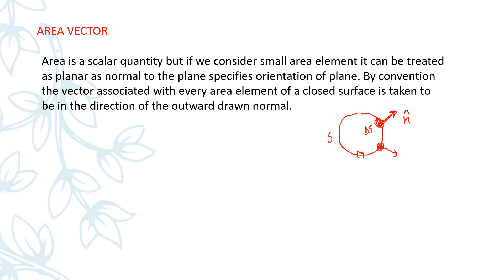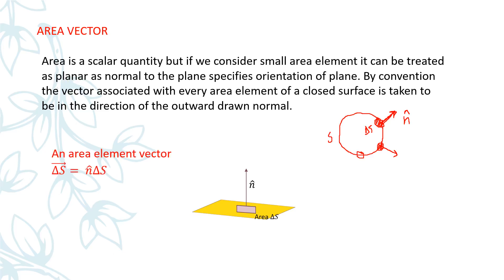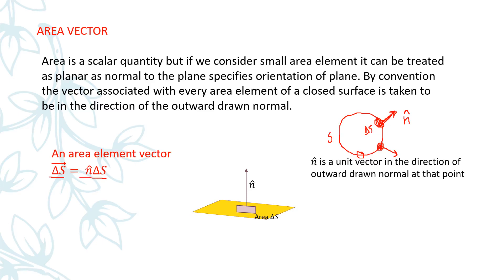If we have a surface and there is a small area element, the magnitude of this area element is ΔS and n̂ is the unit vector normal to the surface. So the area vector can be written as ΔS⃗ = n̂ · ΔS, where ΔS is the magnitude and n̂ is the unit vector in the direction of the outward drawn normal to the surface.